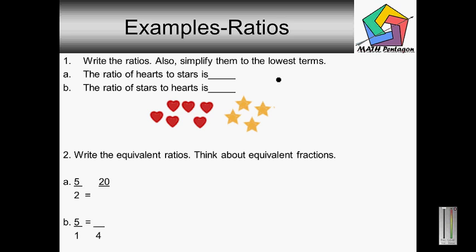The ratio of hearts to stars is: we have one, two, three, four, five, six — we have six hearts. So that will be our numerator. And our stars, we have one, two, three — we have four stars. So we have six over four.